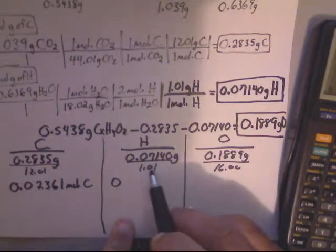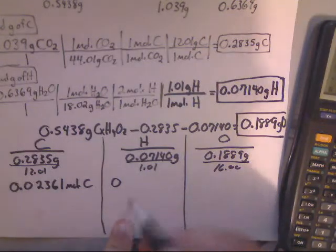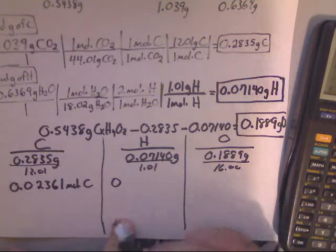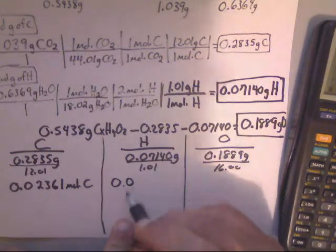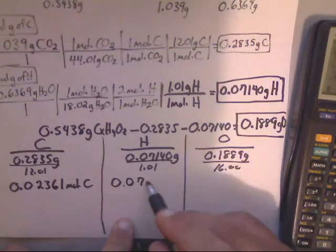So 0.0707. There's three sig figs. And that's going to be moles of hydrogen.